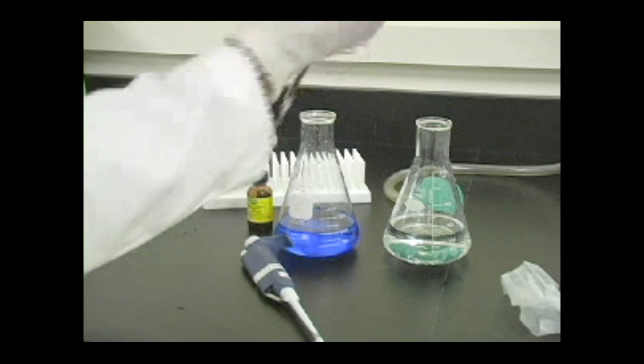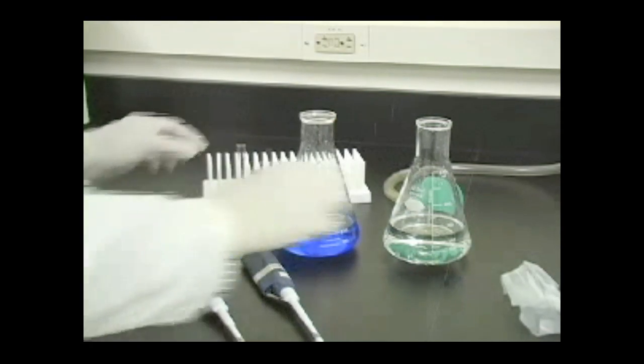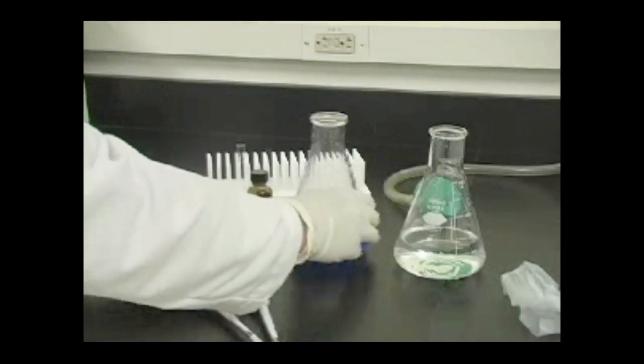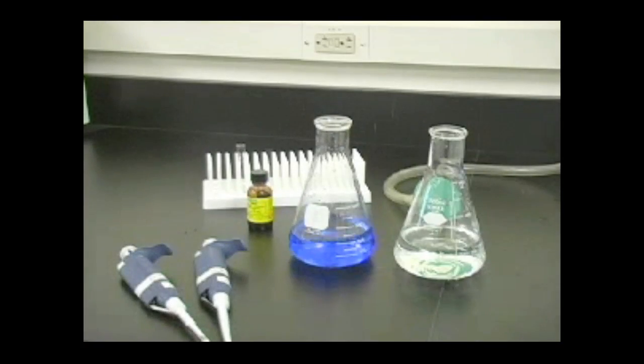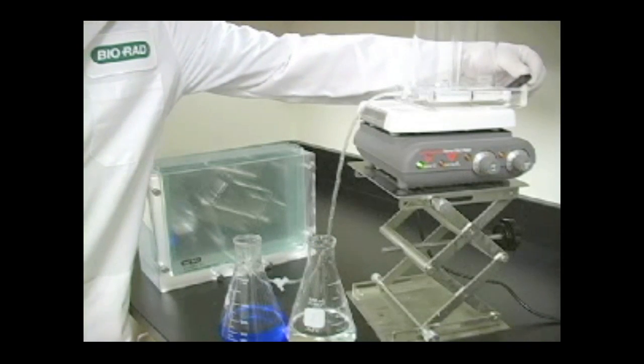In this video we have artificially colored the heavy solution blue so that you will be able to see the gradient forming. Be aware that your heavy solution should not be blue. Make sure to swirl the solutions to ensure the initiators are evenly incorporated into the monomer solutions. You now have about 10 to 20 minutes to complete the rest of the casting before the acrylamide begins to polymerize.